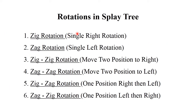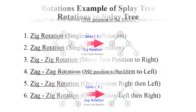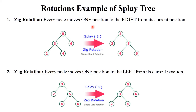Now, rotations in splay tree. There are six rotations mostly used in splay tree: zig rotation, zag rotation, zig-zig rotation, zag-zag rotation, zig-zag rotation, and zag-zig rotation. Let's see how exactly these rotations are performed. Zig means right and zag means left.